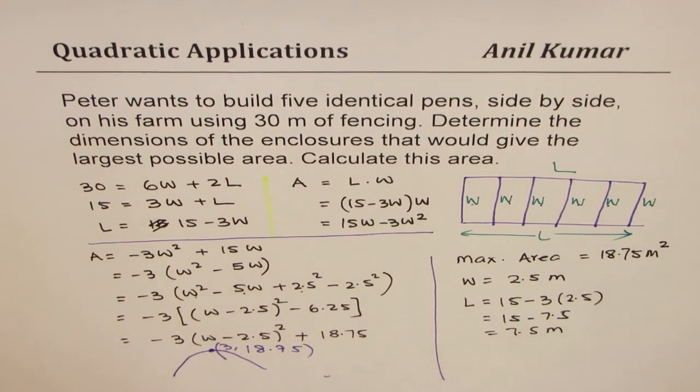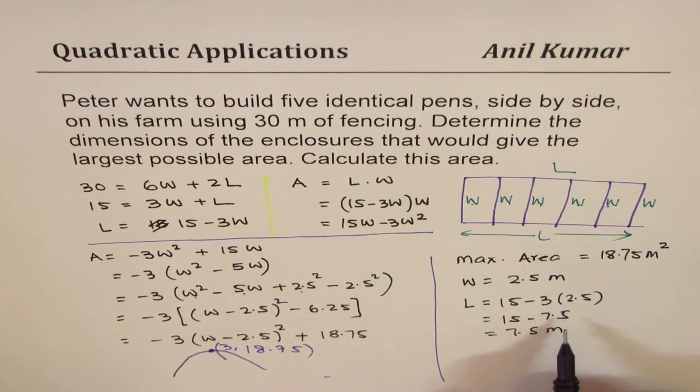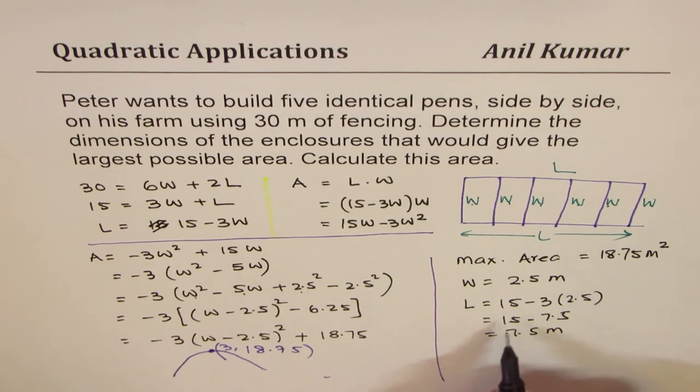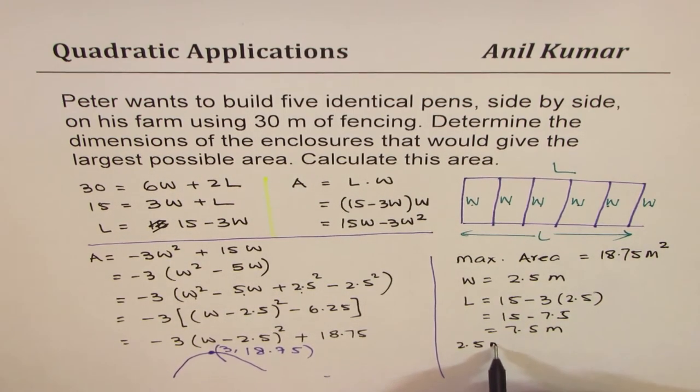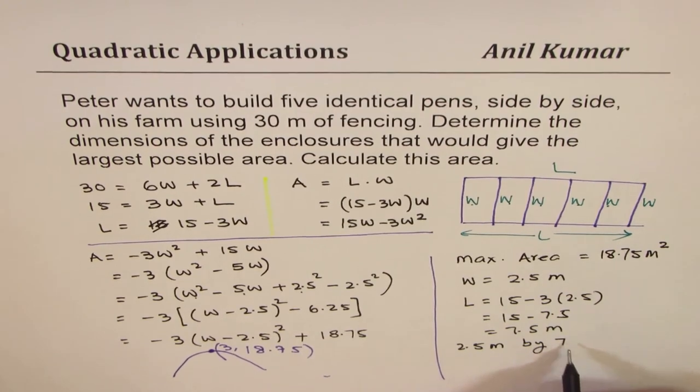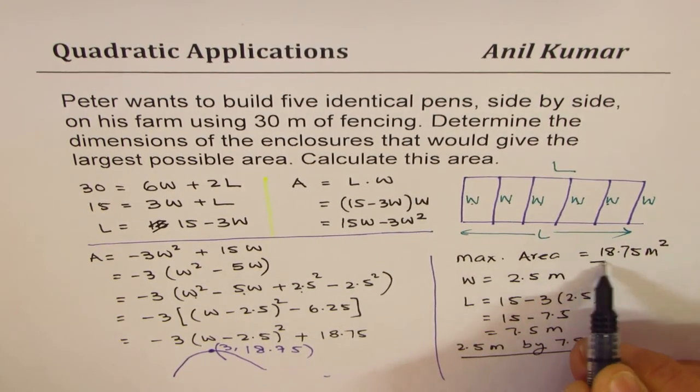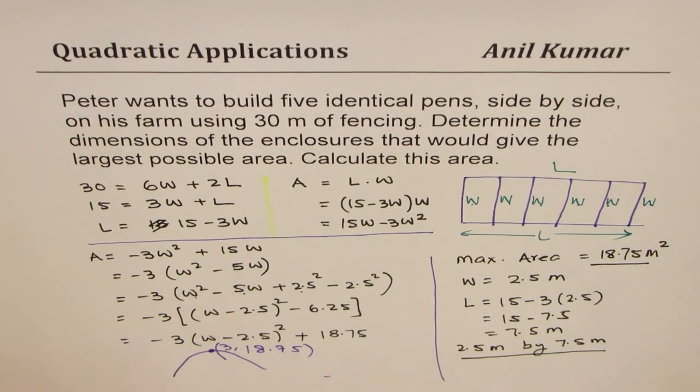So we get our answer: dimensions will be 2.5 meters by 7.5 meters, and maximum area will be 18.75 meters squared.